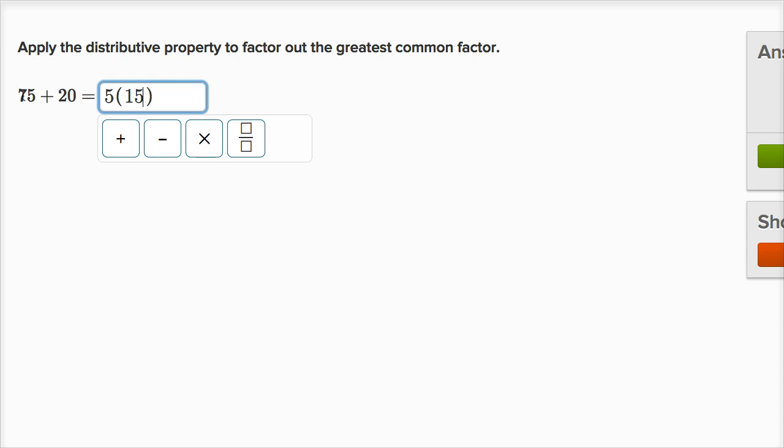And I got that 15 by dividing 75 by five. So 15 plus, and then 20 divided by five would be four. 15 plus four.